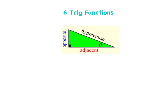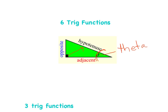Let me start by reviewing our right triangle. Remember, all of this is done on the right triangle — we put a small square in the corner to represent the right angle. The hypotenuse is the easiest to label; it's across from that right angle. The Greek letter theta marks our angle. Adjacent means next to the angle, and opposite is the side across from theta.